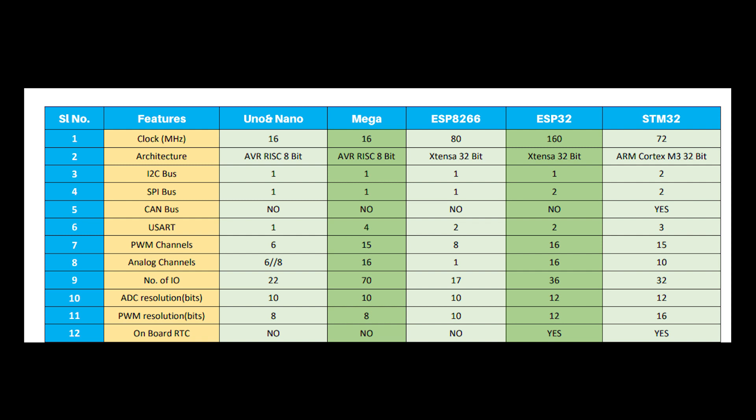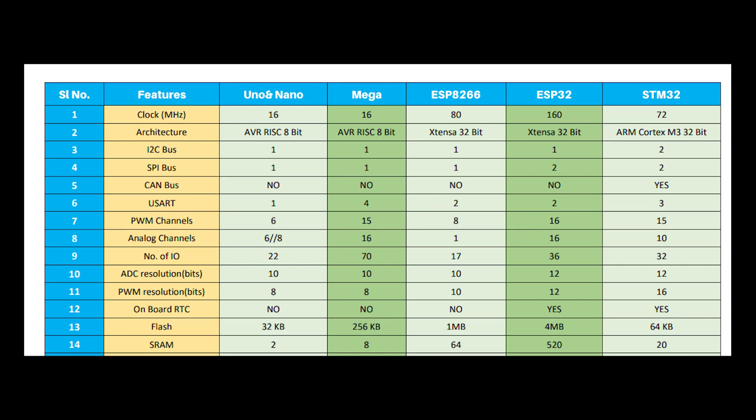RTC or Real Time Clock gives an extra feature to the microcontroller board, but this feature is only available in ESP32 and STM32 boards. For memory, ESP32 has the biggest memory space — its flash size is 4 MB and its SRAM size is 520 KB.